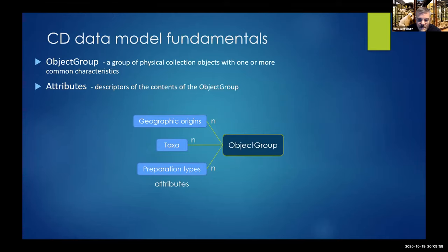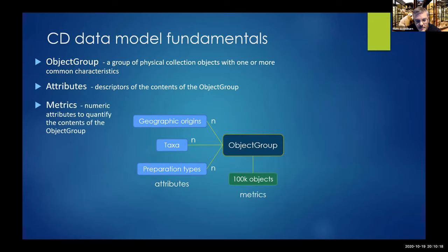There can be a one-to-many relationship between the object group and many of its attributes. We also add metrics — numeric attributes that quantify the contents of the object group, such as number of objects or number of taxa represented. These act as denominators, so rather than just saying 'we've digitized 10,000 specimens,' we can say we've digitized 10,000 out of 50,000 — that's 20% done with 40,000 to go.